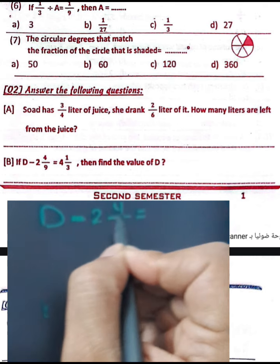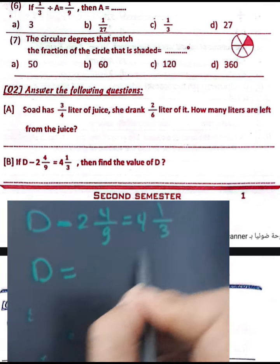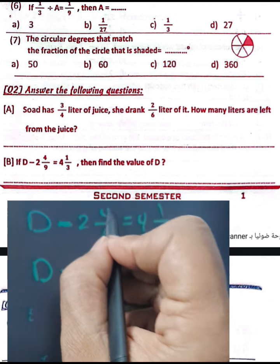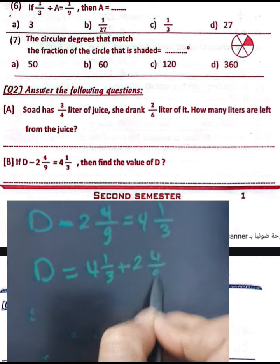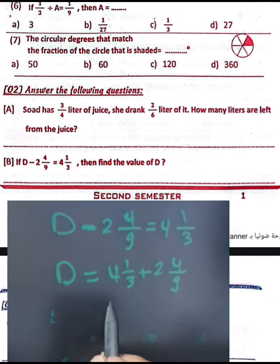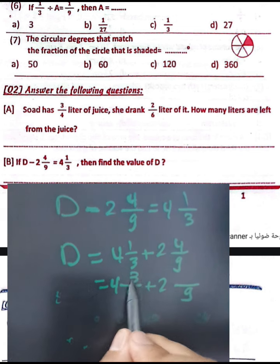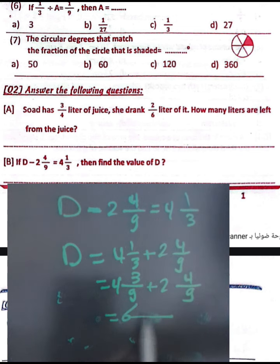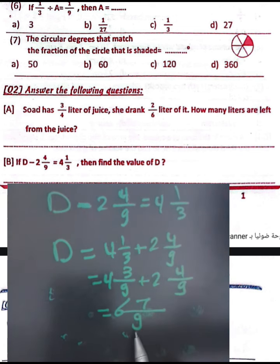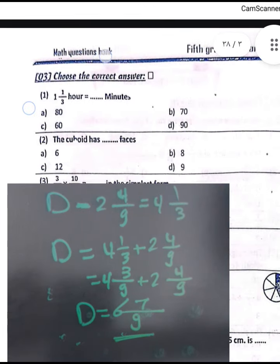Find the value of d: d subtract two and four-ninths equals four and one-third. The subtrahend is two and four-ninths and the difference is four and one-third. Find the least common multiple of 9 and 3, which is 9. Convert: one-third equals three-ninths. Then add: four plus two equals six, and three plus four equals seven. So d equals six and seven-ninths.